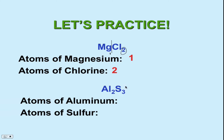Pause the video and try to figure out Al₂S₃. Make sure you're able to visualize and separate everything out. Al₂S₃ means we have two atoms of aluminum and three atoms of sulfur.